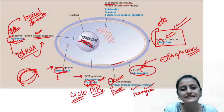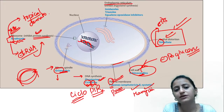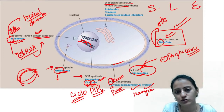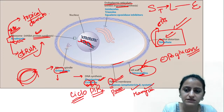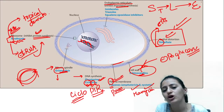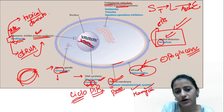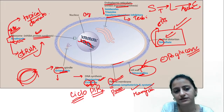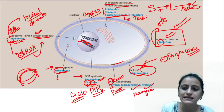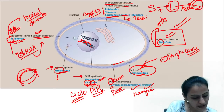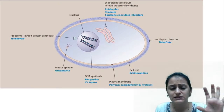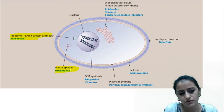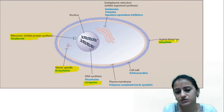The endoplasmic reticulum is where ergosterol is synthesized. Ergosterol synthesis follows SLE: squalene to lanosterol is blocked by terbinafine (squalene epoxidase inhibitor), and lanosterol to ergosterol is blocked by azoles (imidazoles and triazoles). Extra drugs to remember: tavaborole, griseofulvin, cyclopirox, and tolnaftate.